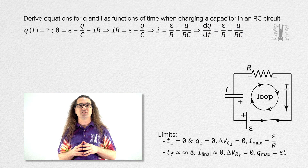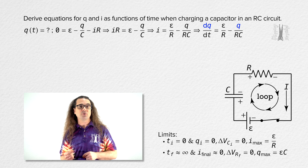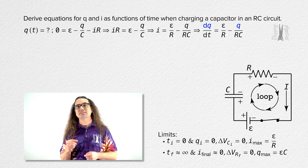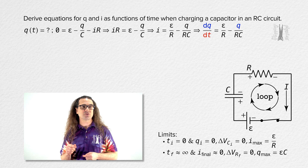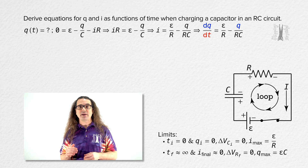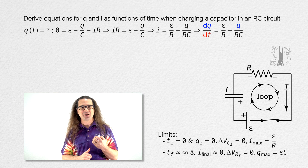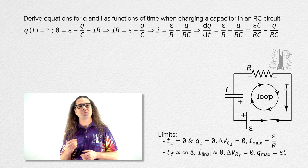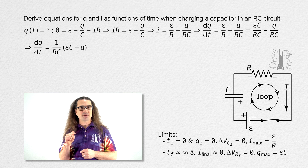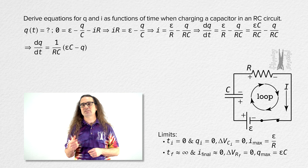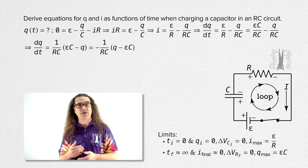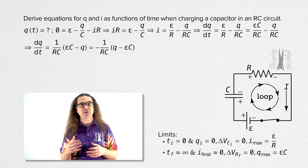Our goal is to get dq and q on the left-hand side and dt on the right-hand side so we can integrate the whole equation. To do that, we start by getting a common denominator of resistance times capacitance on the right-hand side, then factor out the inverse of resistance times capacitance.